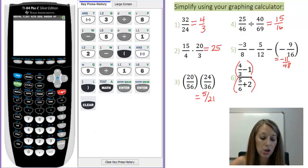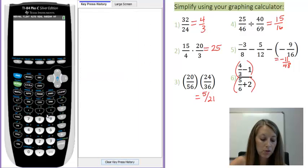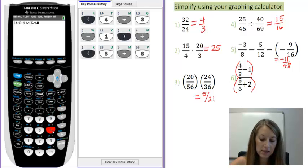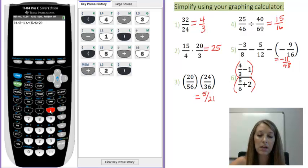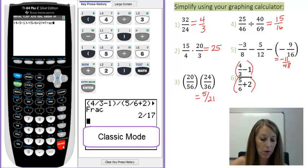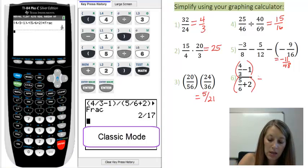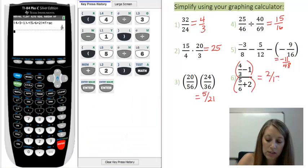So open parentheses 4 thirds minus 1, close parentheses to represent my numerator, divided by open parentheses 5 sixths plus 2, and close parentheses to represent my denominator. Convert it in this step or in the next step. Either way works just fine. And we can see the final answer to this is 2 over 17.